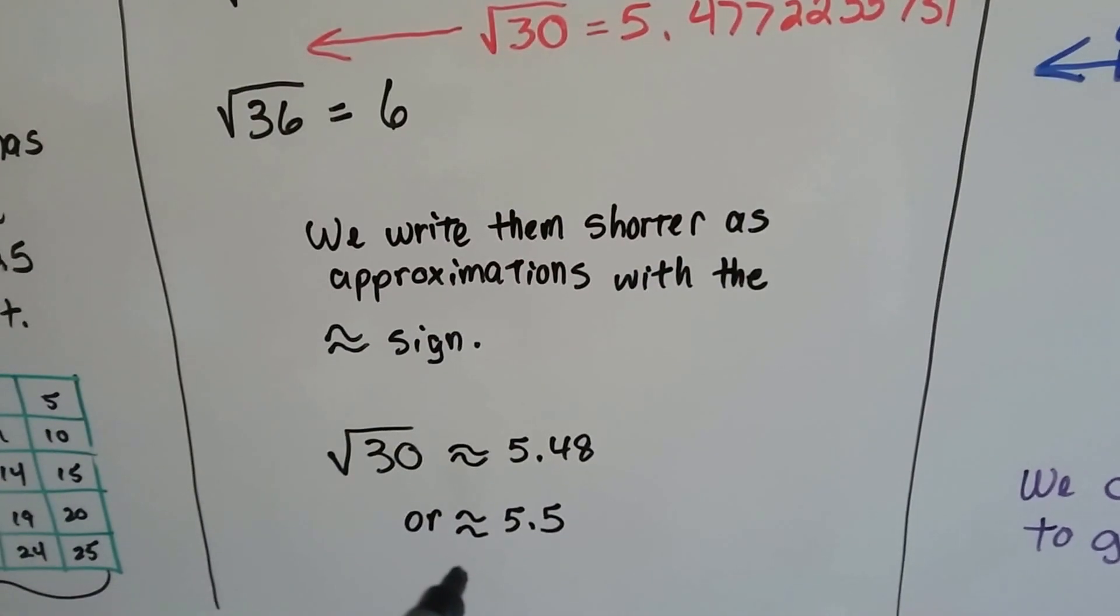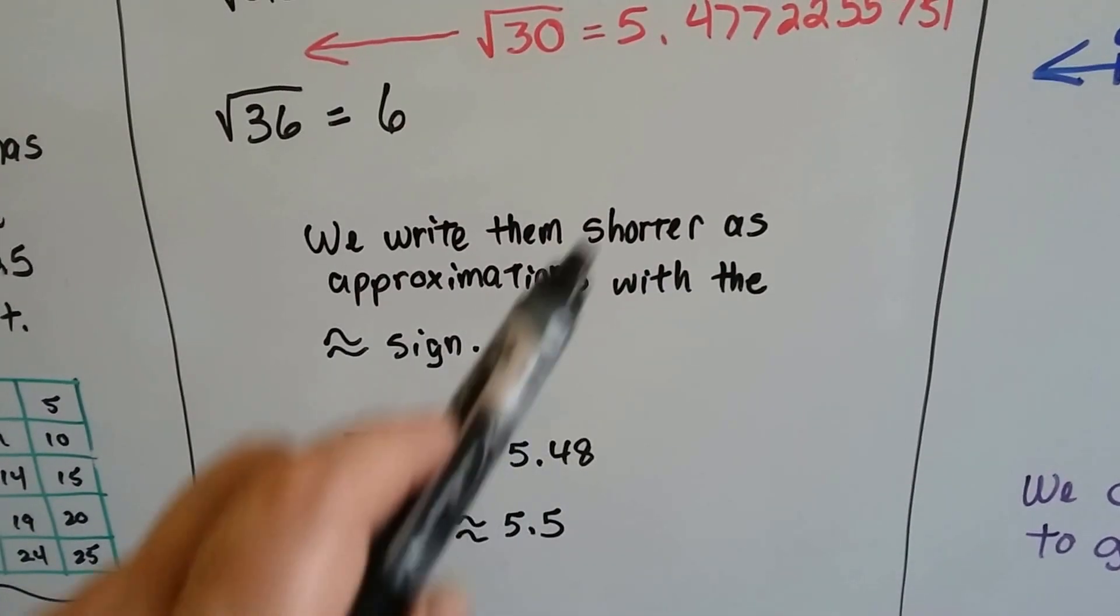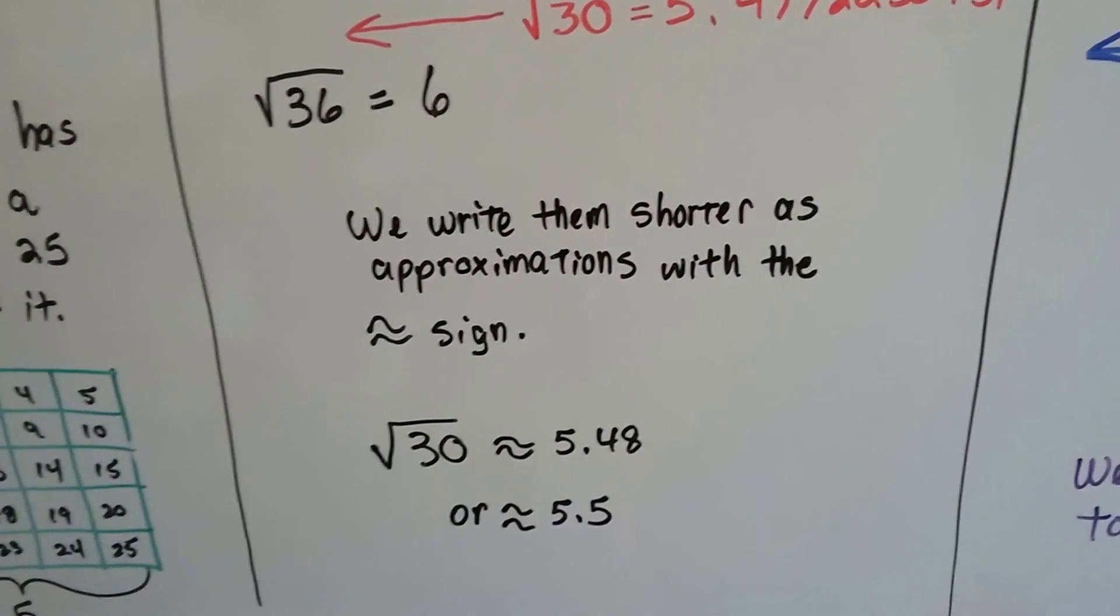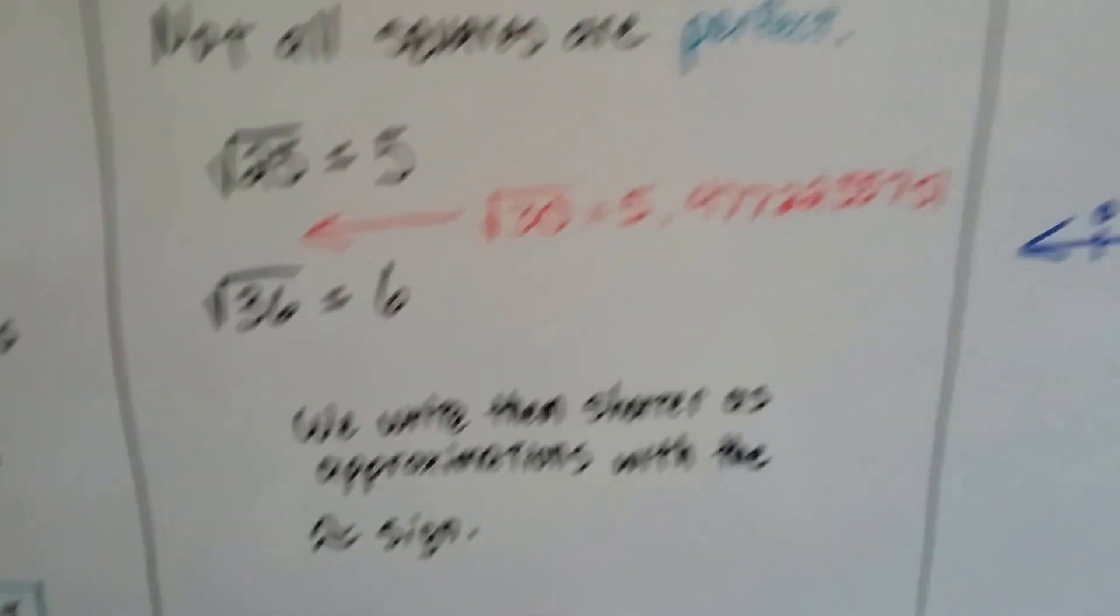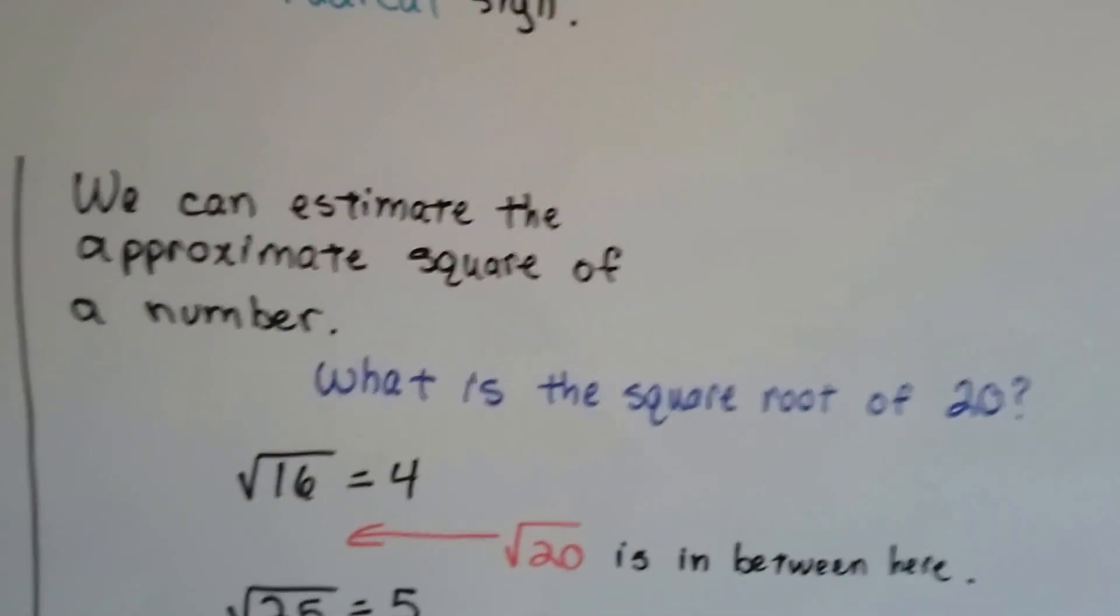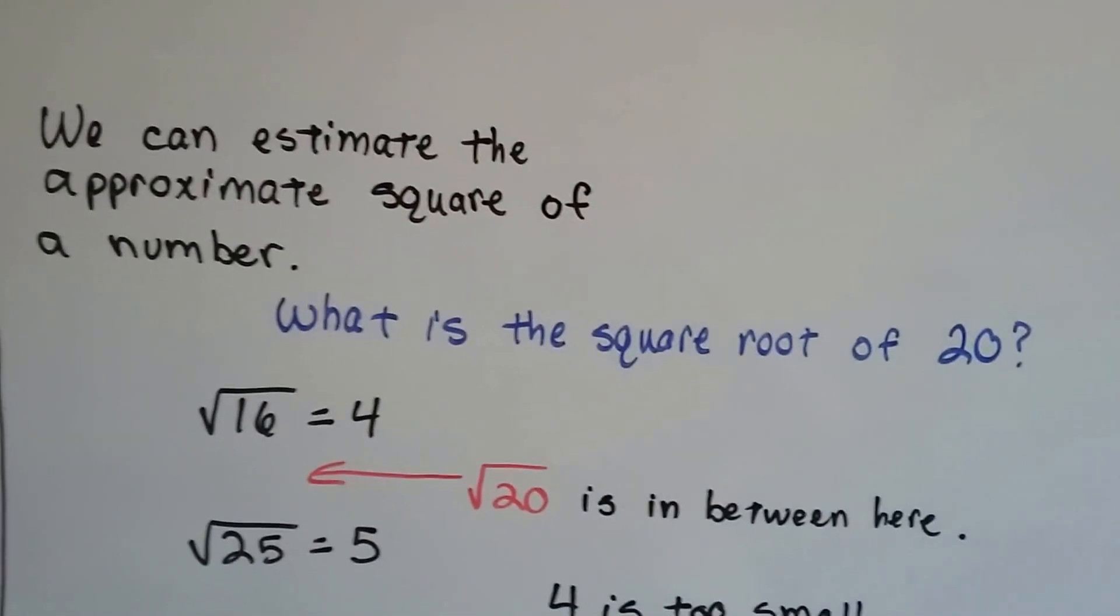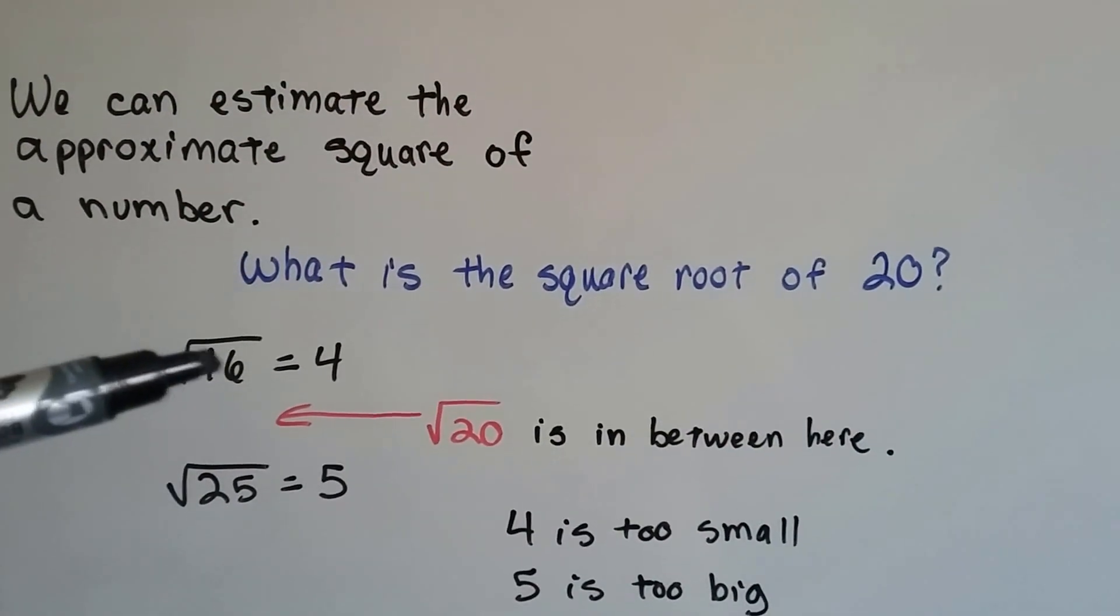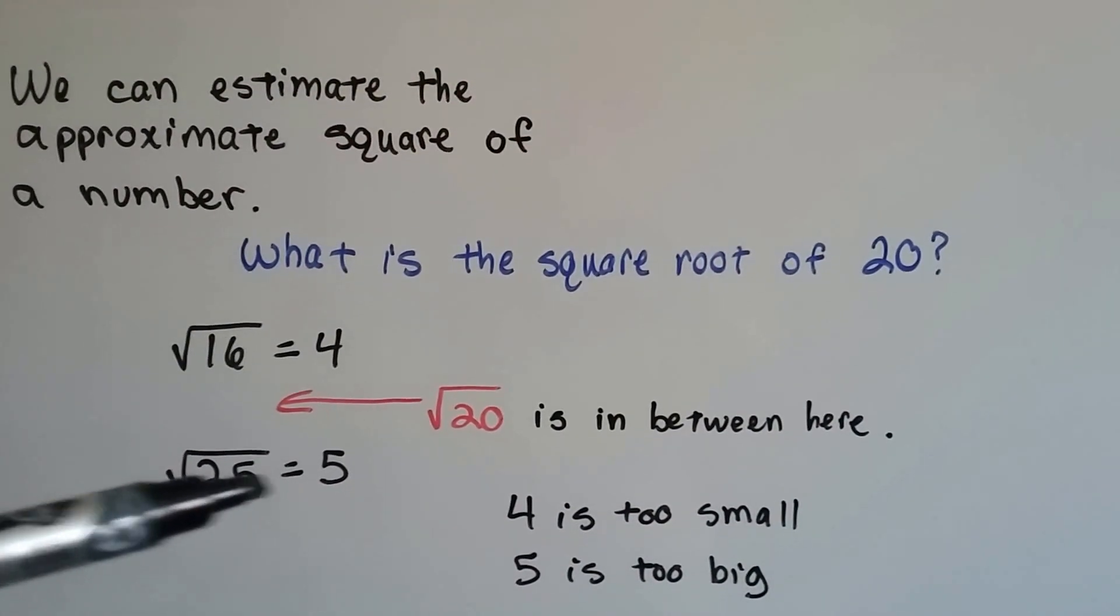We could also say that this 7 is telling the 4 to round up to a 5 and it's approximately 5.5 if we want to write it even shorter. So we can estimate the approximate square of a number. Like what's the square root of 20? Well the square root of 16 is 4 and the square root of 25 is 5.